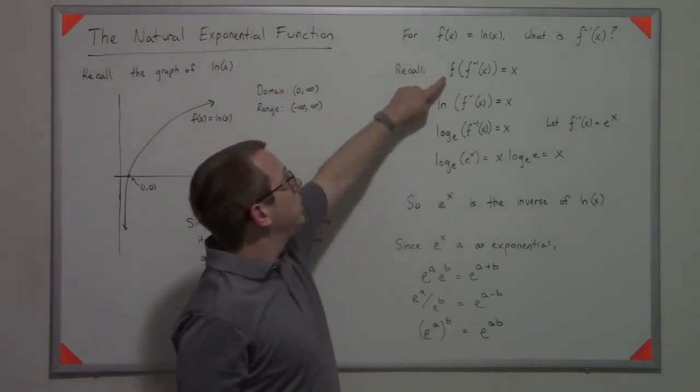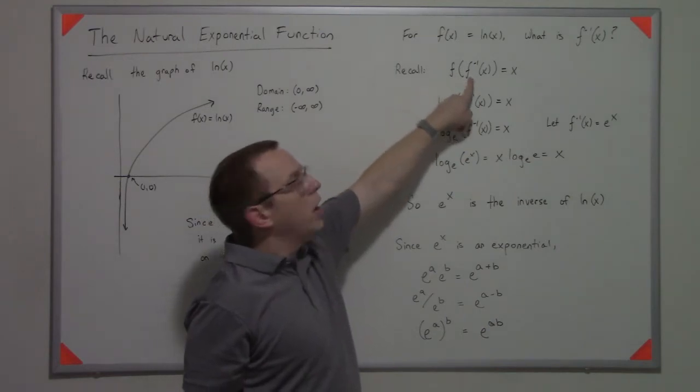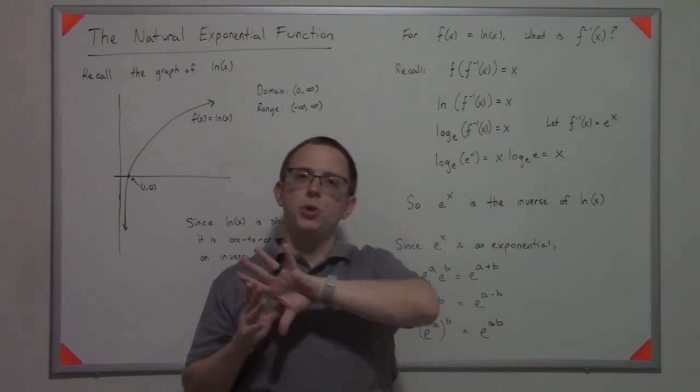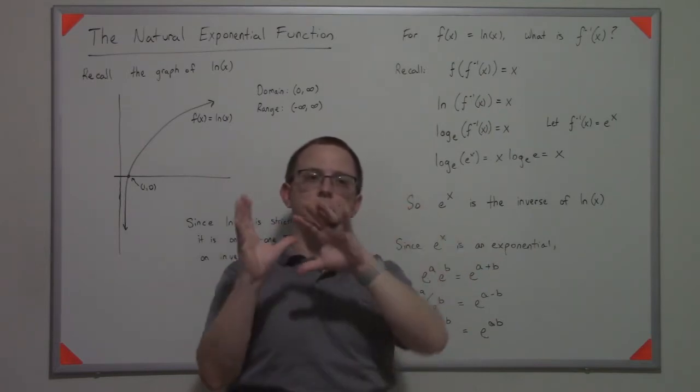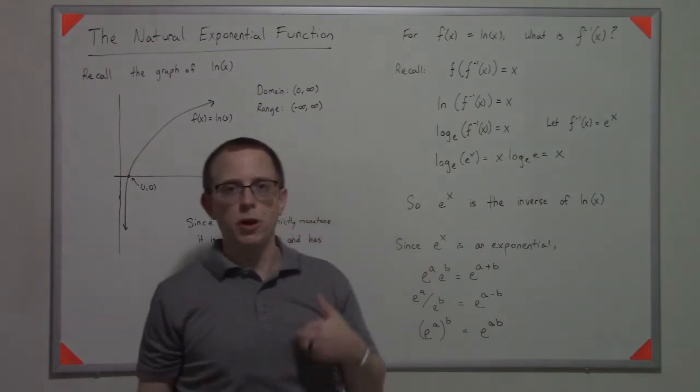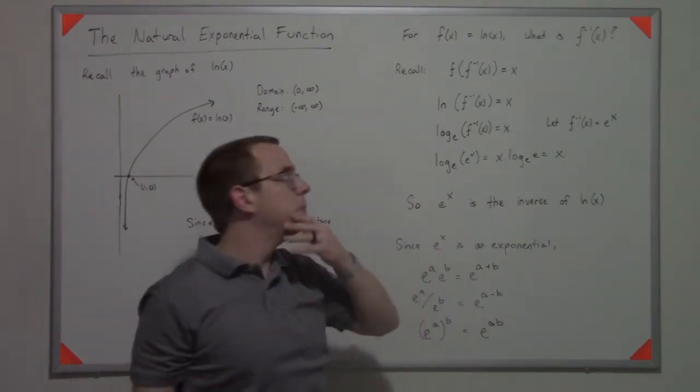The first one is that f of its inverse is equal to x. Remember, inverses kind of undo each other. You take the inverse transformation, and then you pass that through the original transformation, and you get back where you started. So you're just kind of going in a loop.